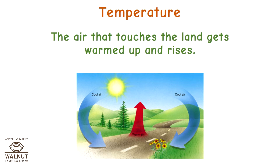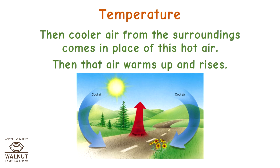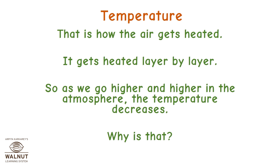The air that touches the land gets warmed up and rises. Then, cooler air from the surroundings comes in place of this hot air, and that air warms up and rises too. That is how the air gets heated — it gets heated layer by layer. So, as we go higher and higher in the atmosphere, the temperature decreases.